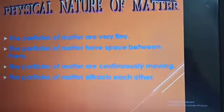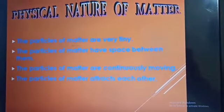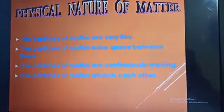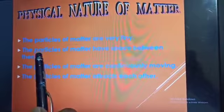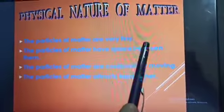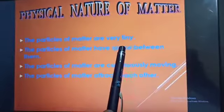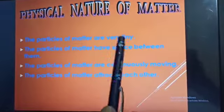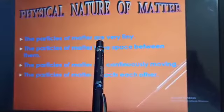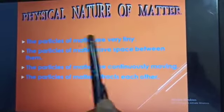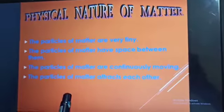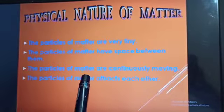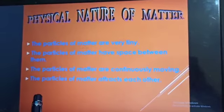Next, what is the physical nature of matter? First, the particles of matter are very tiny, as already discussed. The particles of matter have space between them, and the spacing depends upon the state of matter. If it is solid, the particles are very close to each other.